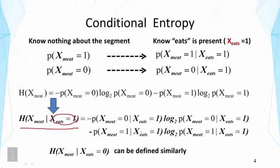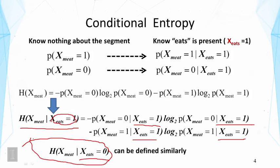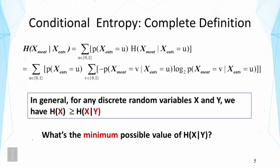This is essentially the same entropy function as before, except that all the probabilities now have a condition. This tells us the entropy of 'meat' after we have known 'eats' occurring in the segment. We can also define this conditional entropy for the scenario where we don't see 'eats' — if 'eats' did not occur in the segment, then this conditional entropy captures the uncertainty of 'meat' in that condition.